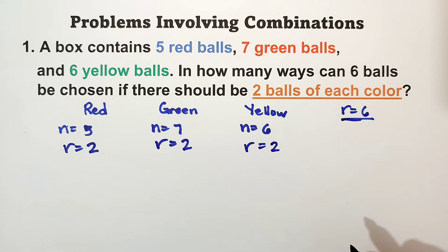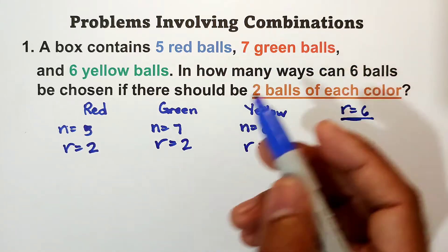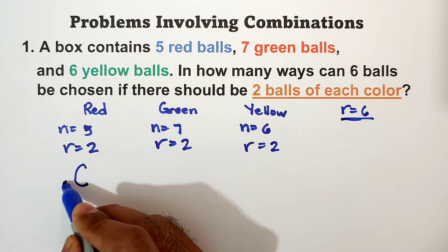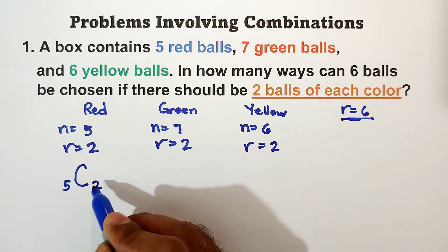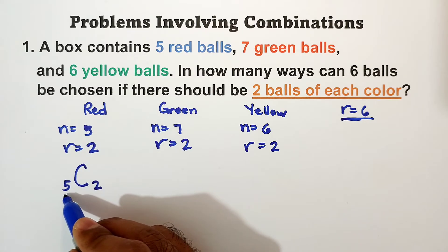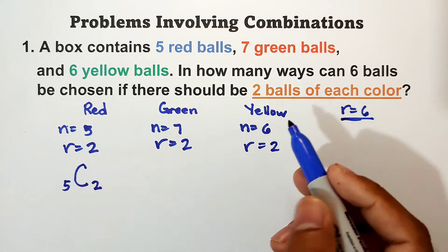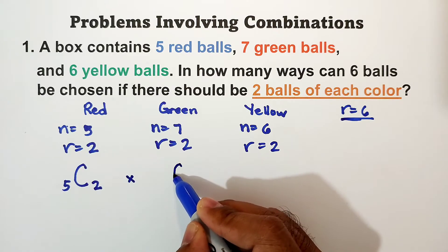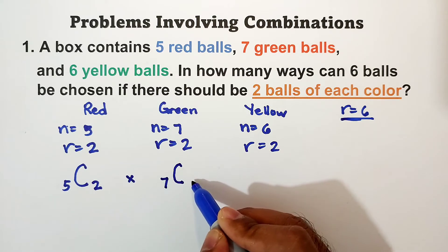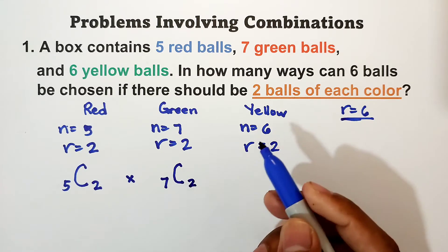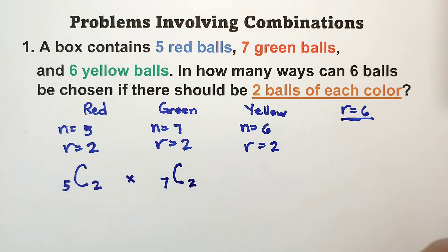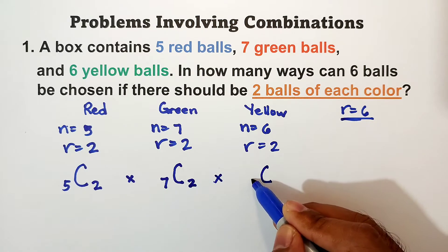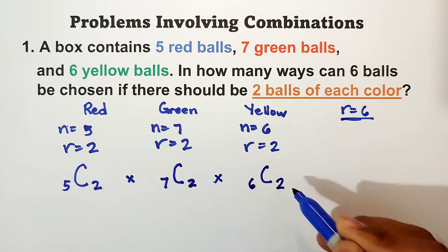Now, let us solve using combination: combination of five taken two, times combination of seven taken two, times combination of six taken two.